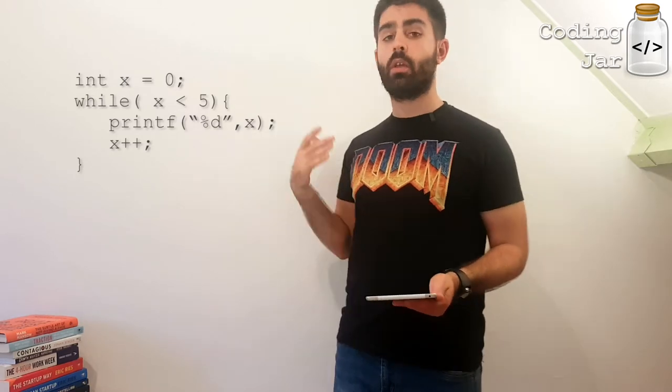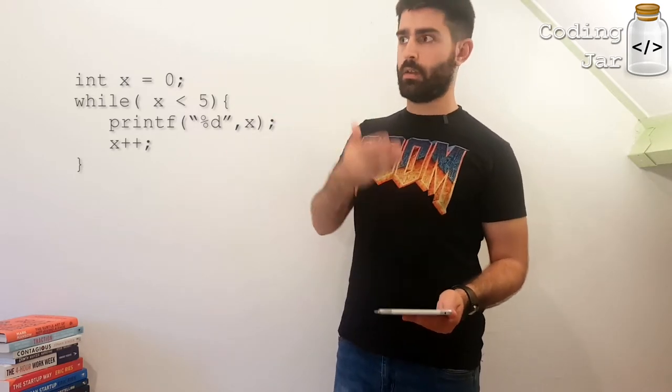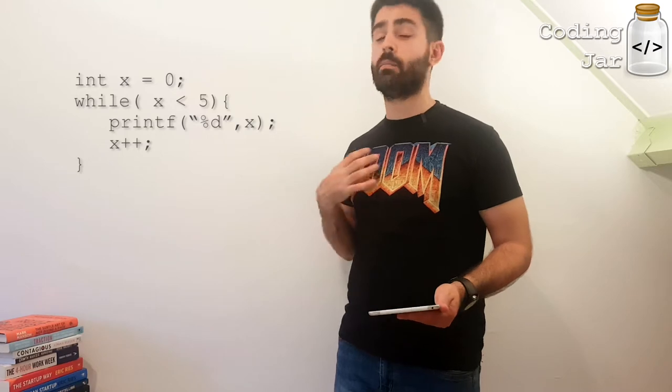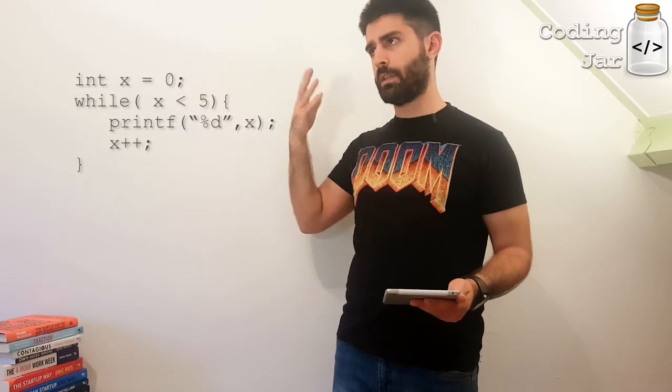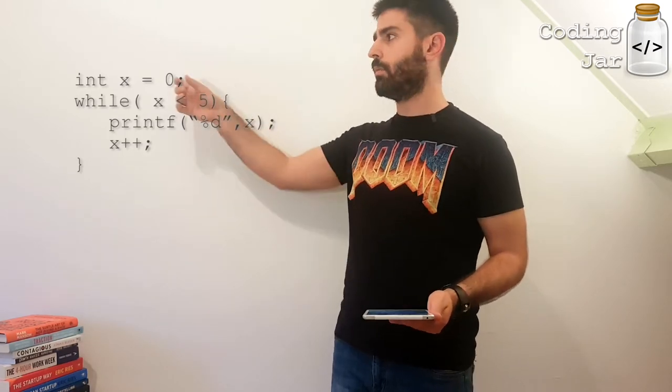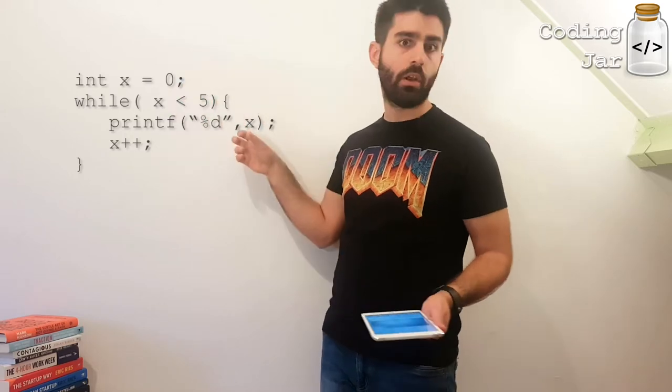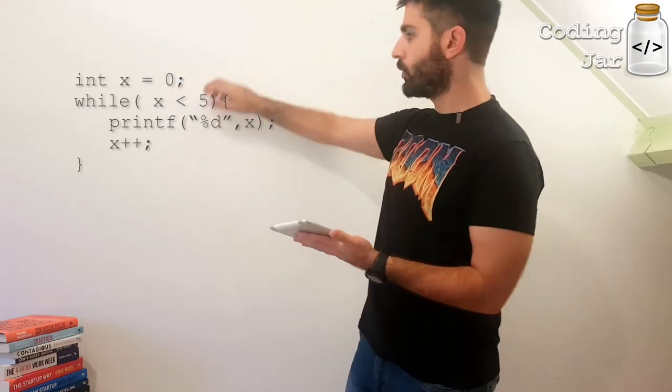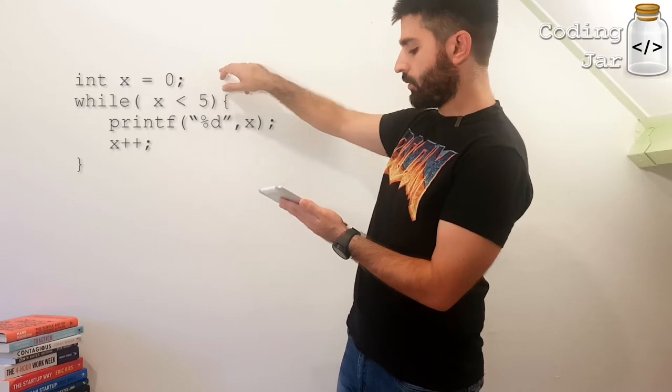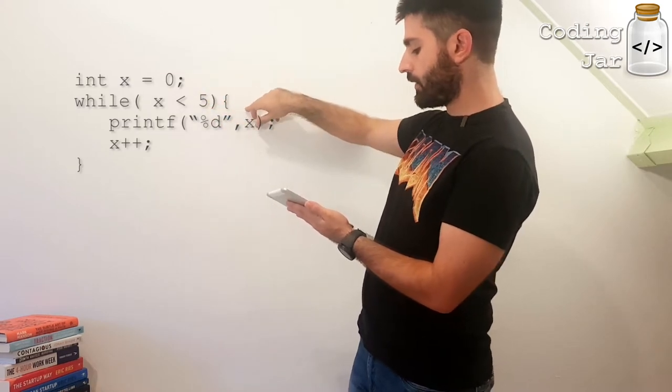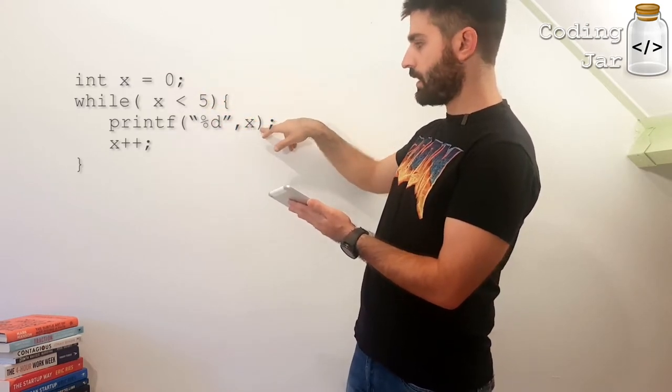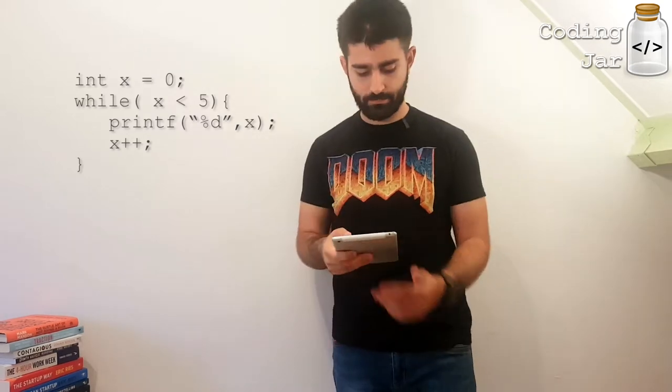It's a stripped down version of for. You can't use it with numbers like the for statement, but while, in my opinion, is better used when you use boolean expressions and boolean variables. An example would be int x equals 0, while x less than 5, printf %d x, x++.